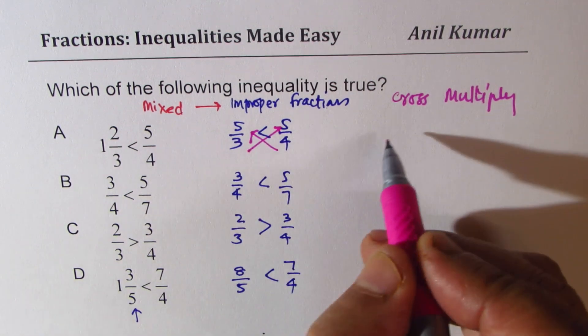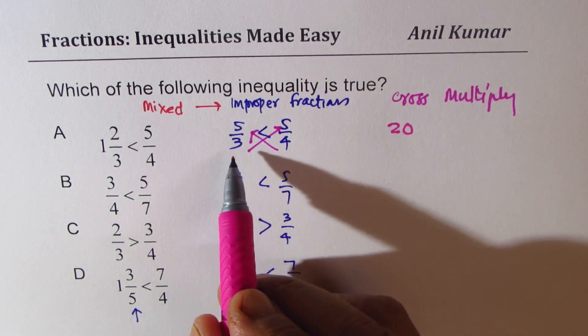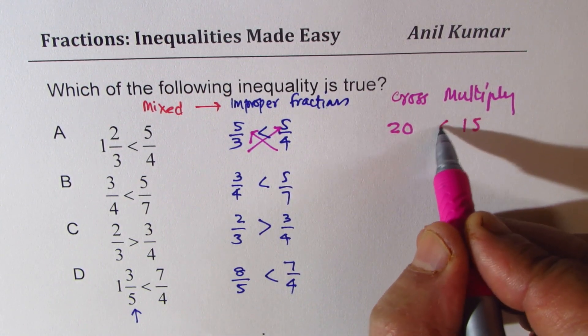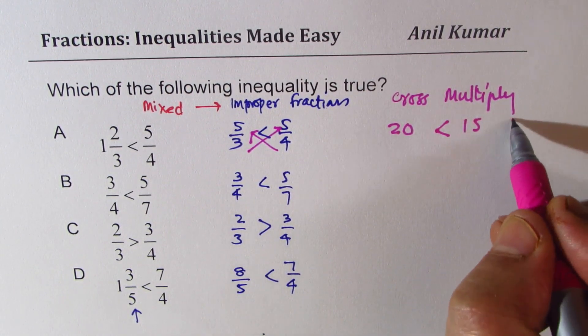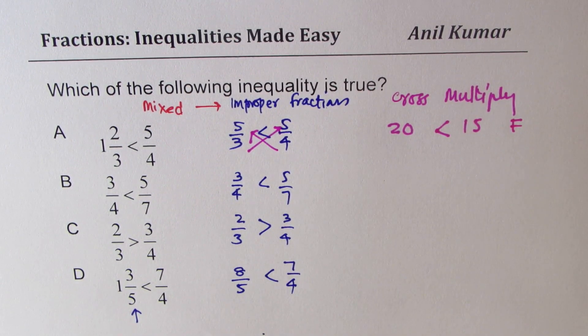So when you do 4 times 5, you get 20. And when you do 3 times 5, you get 15. The sign is this. So we know 15 is bigger, so this is false. Do you see that?